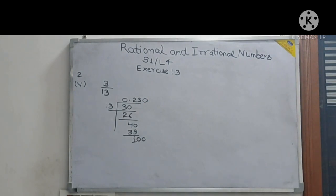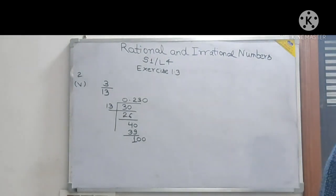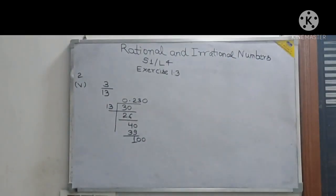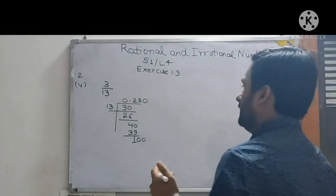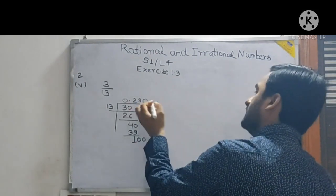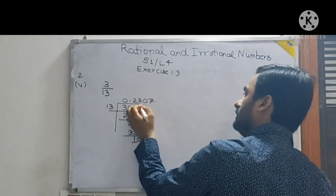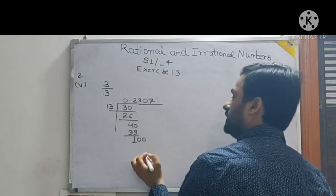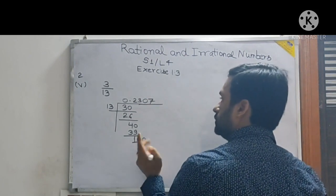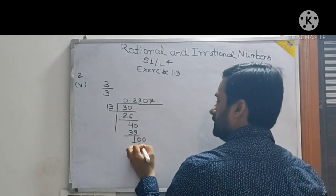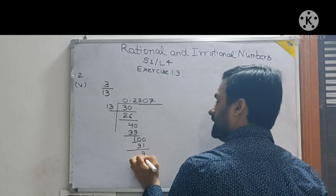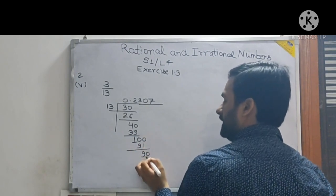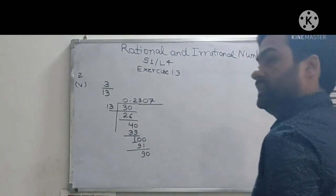13 threes are 39. 1 comes. Again here because the decimal will become 10. But still it is smaller. So put a 0 here. Then one more 0 will come. 13 fives are 65. Then 13 sixes are 78. 13 sevens are 91. What remains? 9 comes. Again because of the decimal it will become 90.